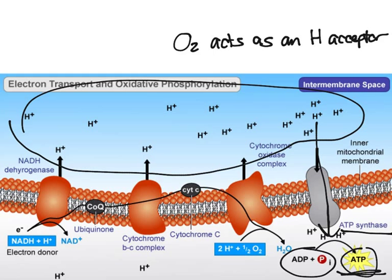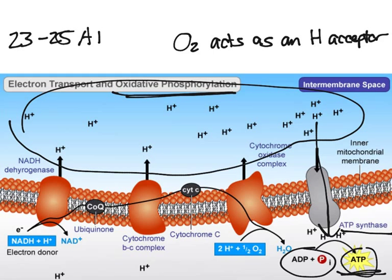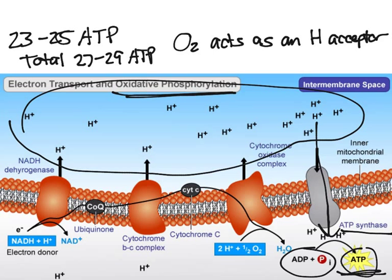It's important to note that the bulk of ATP — the vast majority of ATP made from cellular respiration — comes from oxidative phosphorylation. The number of ATP varies greatly; people still haven't established a key number everyone agrees on. But for our purposes, we say that 23 to 25 ATP come from this process, and there's a total of 27 to 29 ATP per one glucose molecule.